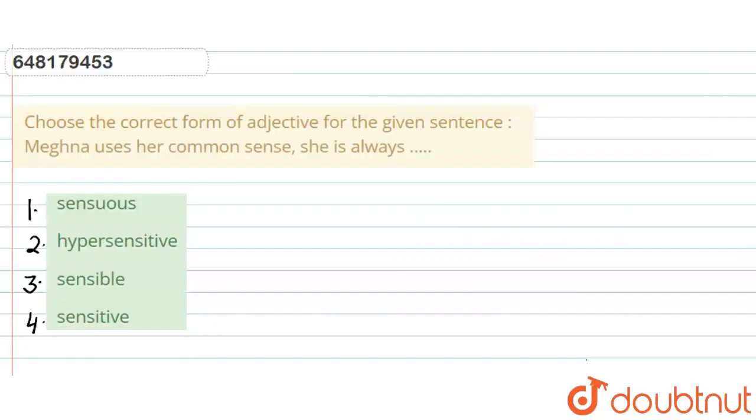Hello everyone, this is our question. Choose the correct form of adjective for the given sentence. Adjective use, the sentence is: Meghana uses her common sense. She is always dash. So here we will see what are the options?